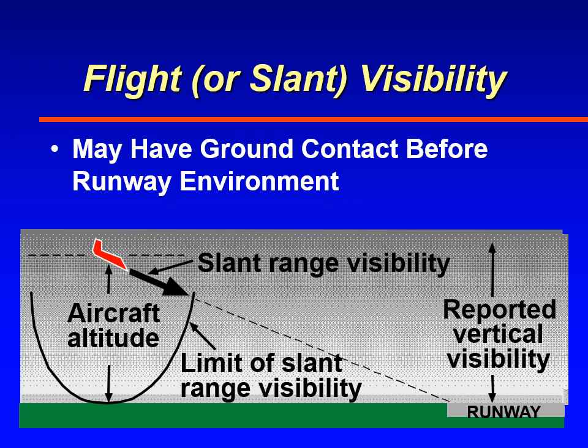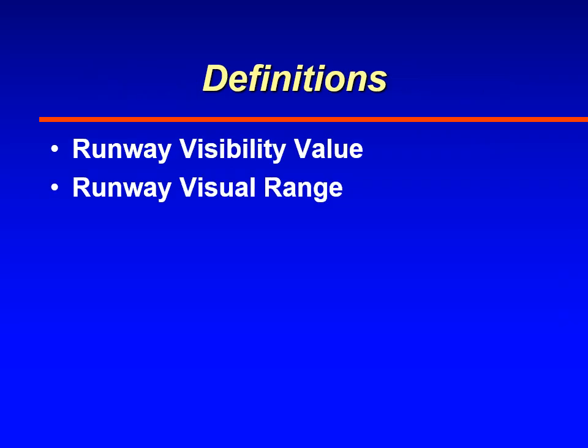Remember that you may have ground contact before you ever see the end of the runway — ground contact meaning that you're able to see straight down. If you have an obscuring phenomenon such as fog reducing visibility to a half mile, a half mile is about 2,000-some feet. So you'll probably be able to see the ground at a three-degree angle as you approach the runway, but not see the end of the runway, and that makes for some problems.